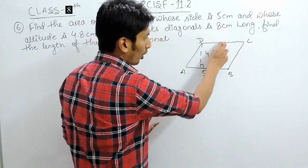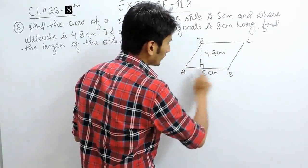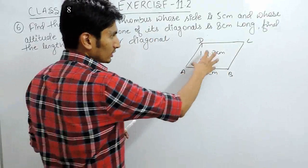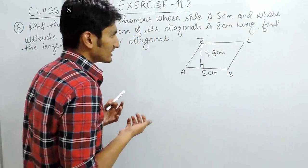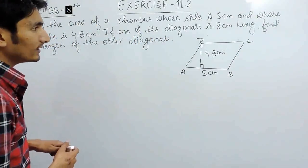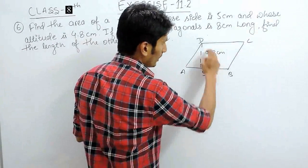In rhombus also the opposite sides are parallel and equal but here all the sides are equal. So, area for this rhombus will be nothing but same as the area of the parallelogram and we know that the area of the parallelogram is base into height.